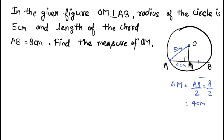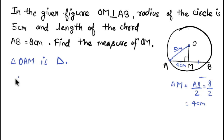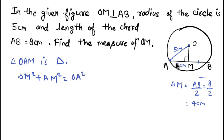Now we have to find OM. Triangle OAM is a right-angle triangle, so we apply the Pythagorean theorem: perpendicular squared plus base squared equals hypotenuse squared. That gives us OM squared plus AM squared equals OA squared. We know the hypotenuse and base, so OM equals the square root of OA squared minus AM squared.